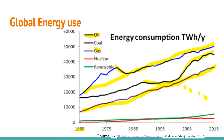Two more sources to mention: nuclear power — the red line shows it at a steady level; at the moment we don't have a buildup of new nuclear power plants. Then renewables: in the first time it was more or less hydro. Hydro energy is a renewable source, but placing hydro is difficult in densely populated areas because there are not enough rivers.